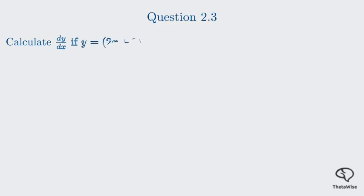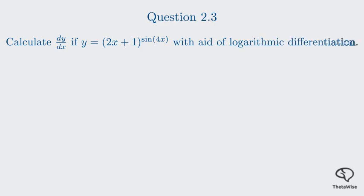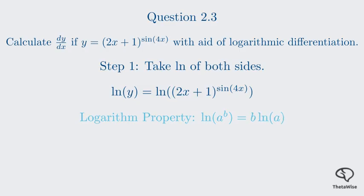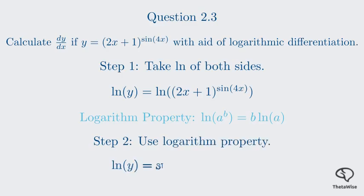We've reached Question 2.3. We need to calculate dy/dx for the function y equals 2x plus 1 to the power of sin of 4x. The key instruction is to use logarithmic differentiation, which is required because the variable x appears in both the base and the exponent. Taking the natural logarithm of both sides allows us to use the log power rule to bring the exponent down. So ln y equals sin 4x times ln of 2x plus 1. This expression is a product of two functions of x, which we can differentiate using the product rule.